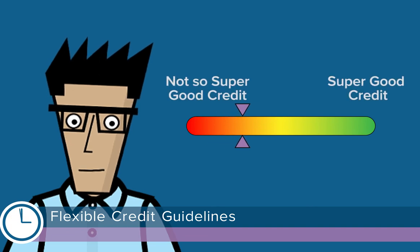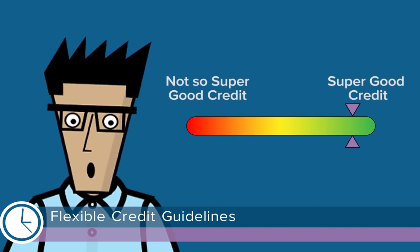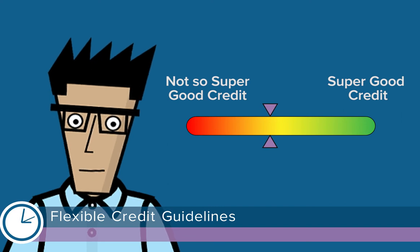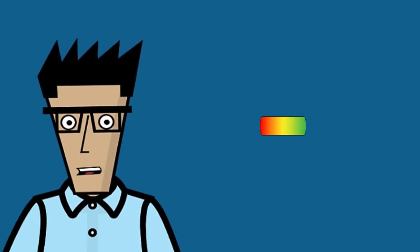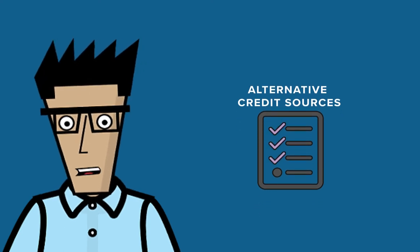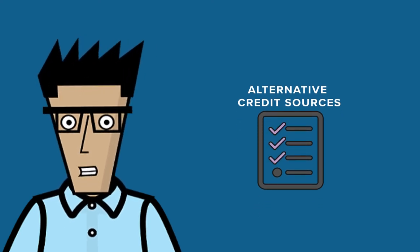FHA's flexible credit guidelines can benefit first-time homebuyers who have limited or less than perfect credit histories. FHA accommodates borrowers with lower credit scores and they allow alternative credit sources to be considered by lenders when they analyze a borrower's ability to manage debt.